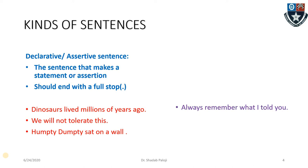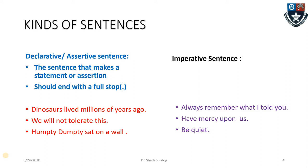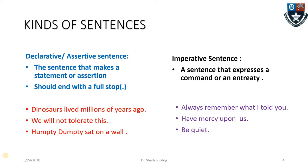Now let us look at some more: 'Always remember what I told you,' 'Have mercy upon us,' 'Be quiet.' These are not declarative — they are imperative. The difference is that while the first type declares or asserts something, the imperative statement has some amount of command or request. So such a sentence is called an imperative statement: one that expresses a command, an entreaty, or a request.